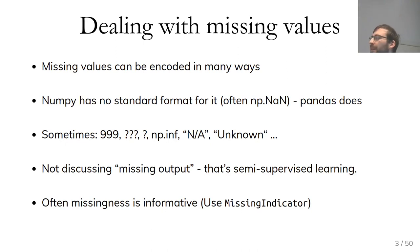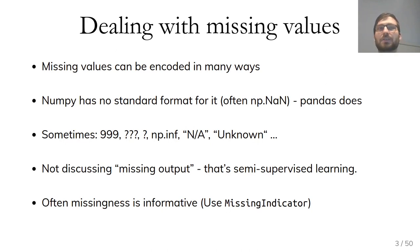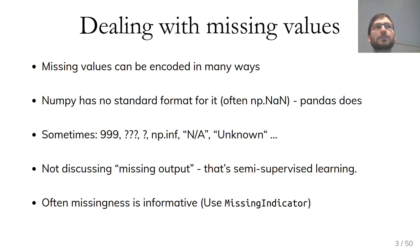One thing I'm not going to talk about is missing output, because that's semi-supervised learning and goes beyond the class. Basically for now, if your target is missing, the best thing you can do is throw away that row, because you can't learn a supervised model on it. I'll mostly talk about how to deal with missing values in continuous variables and how to fill them in. Another thing that's often informative is actually knowing that a value was missing — it's not always best to pretend you knew the value. Very commonly there's a reason why something was missing. If you look at medical data, for example, doctors don't order tests at random — they order tests they think will be informative.